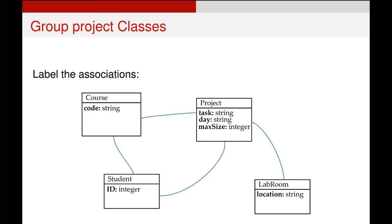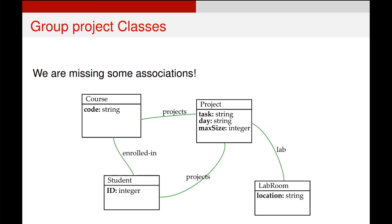Then we'll add in our associations, and we can see from the text description that projects need a room, projects also need students, and are attached to a course. Courses need students and projects, and students need courses and projects as well. What we then do is label them, and this is just a description of that relationship. So the enrolled in association is what associates students and courses. What's the association? Well, a student is enrolled in a course.